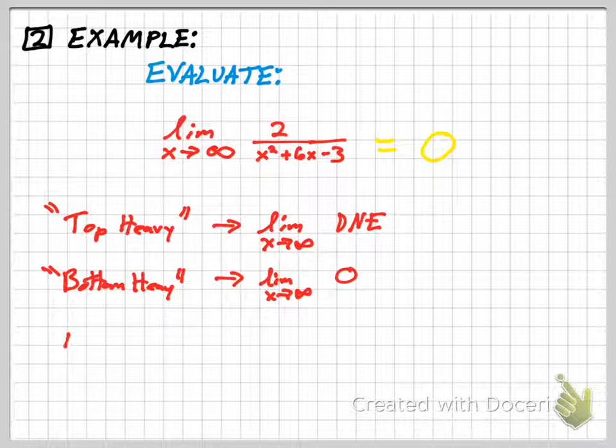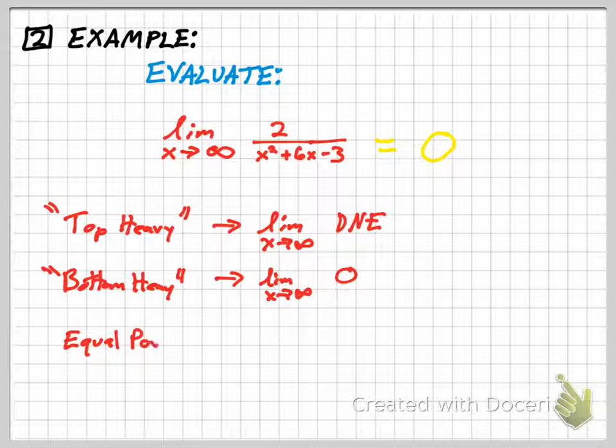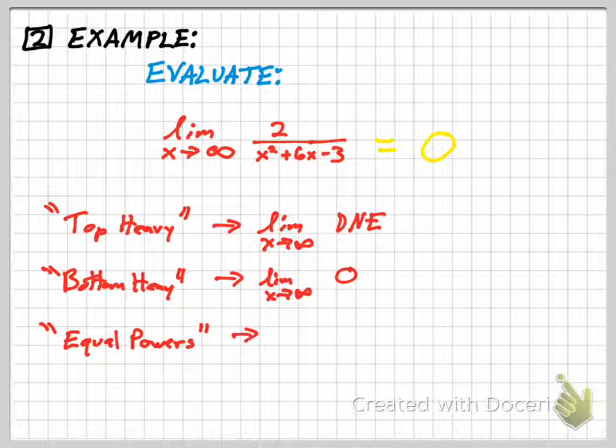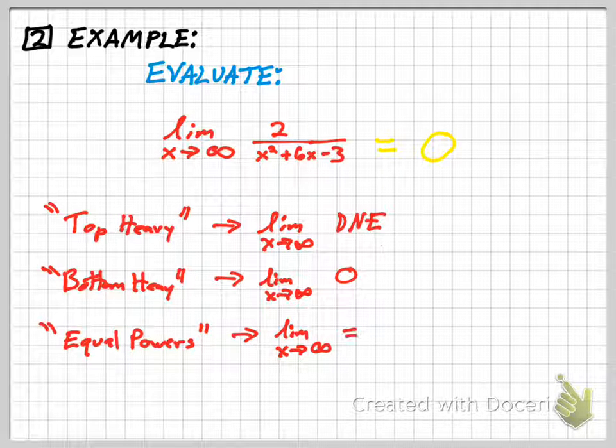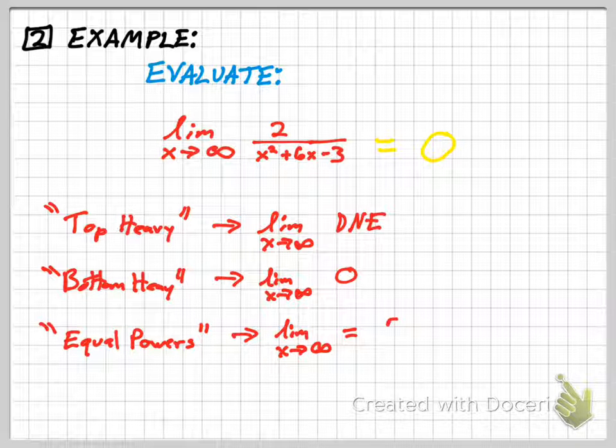And then if they're equal powers on the numerator and the denominator, then the limit will be the ratio of the leading coefficients. I'll write that out. Ratio of leading coefficients. This is something you've already studied.